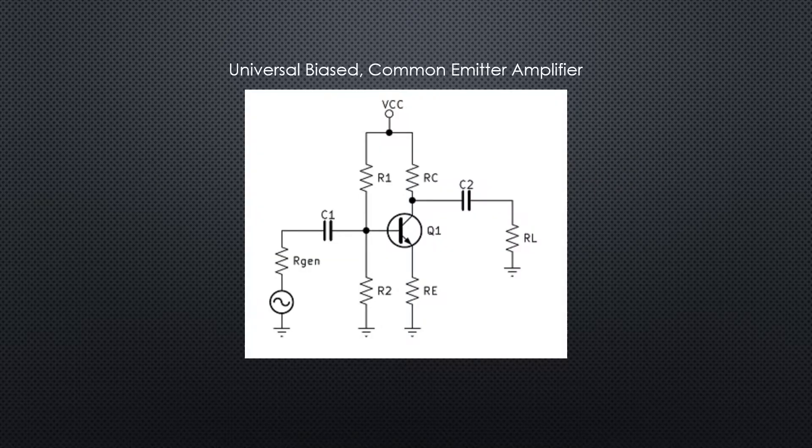So here's our common emitter amplifier using universal biasing. In the previous videos we've looked at how to calculate the low frequency cutoff and the high frequency cutoff.